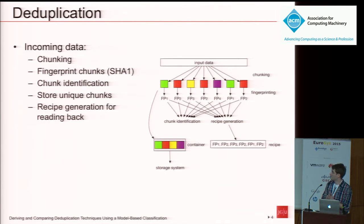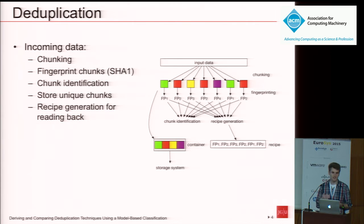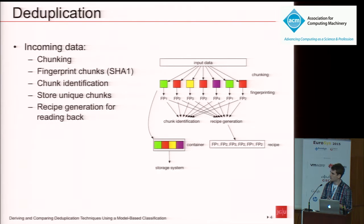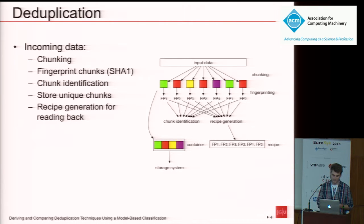How does deduplication work in detail? The first steps are roughly the same for each system. The idea is to cut the input data into pieces, the so-called chunks, and then try to identify whether you have seen these chunks in the past or not. In detail, the input data is first chunked into chunks of size between 4KB, 8KB, and 16KB. Next, the system computes chunk fingerprints based on the chunk raw data. This is usually a SHA-1 hash.